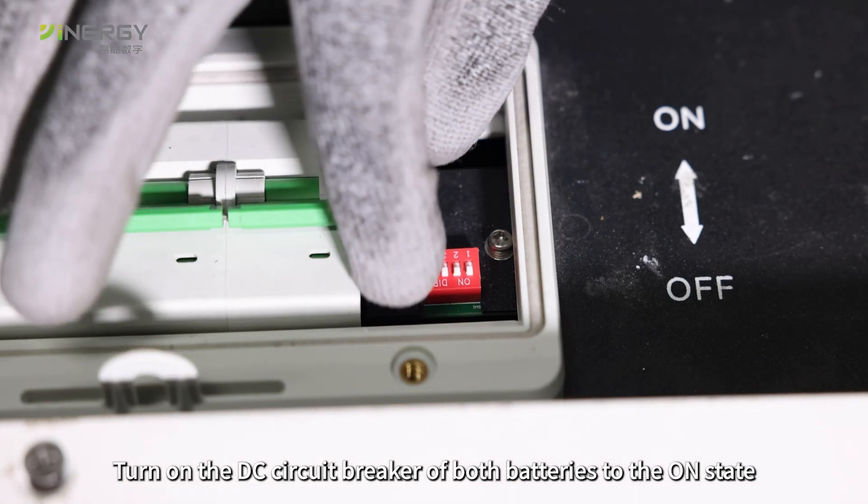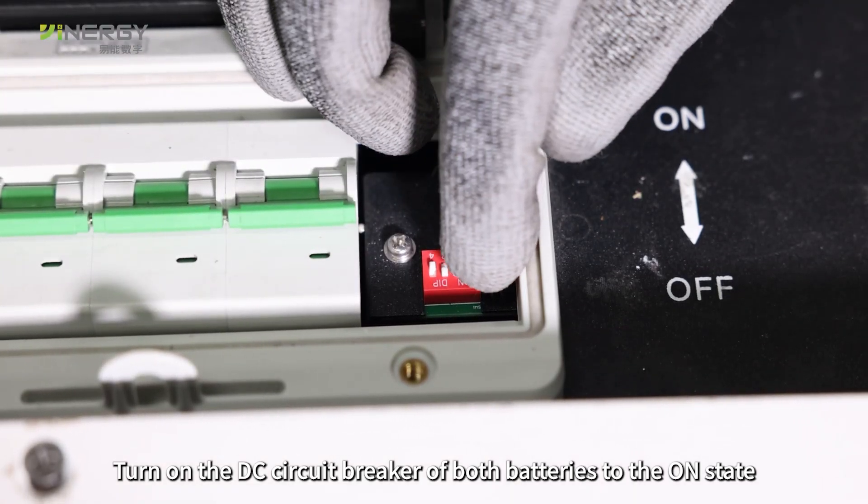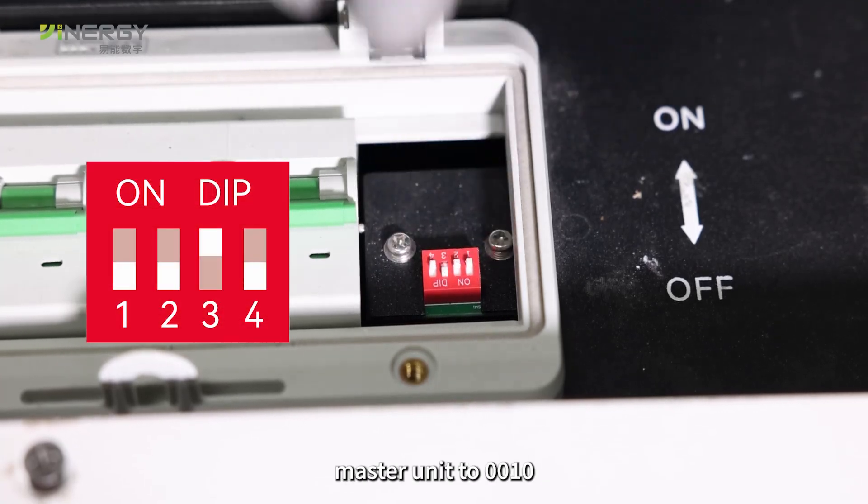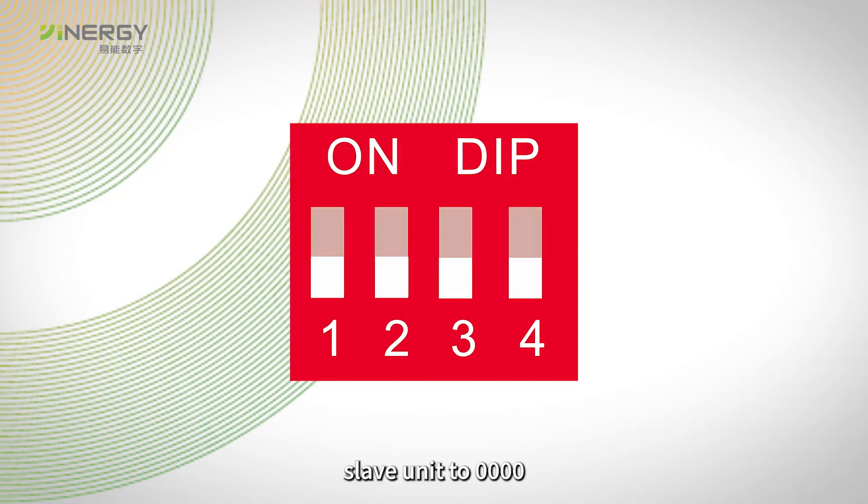Turn on the DC circuit breaker of both batteries to the on state. Step 5: Set the DIP switches - master unit to 0010, slave unit to 0000, to match the correct communication protocol.